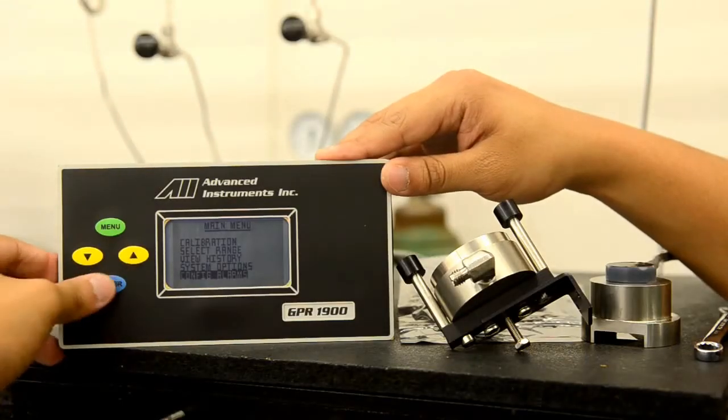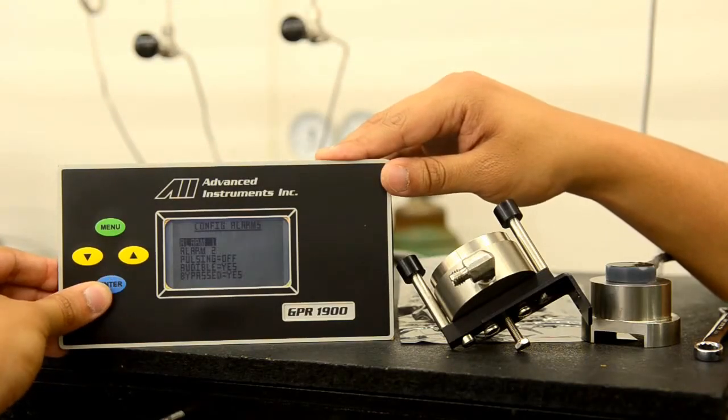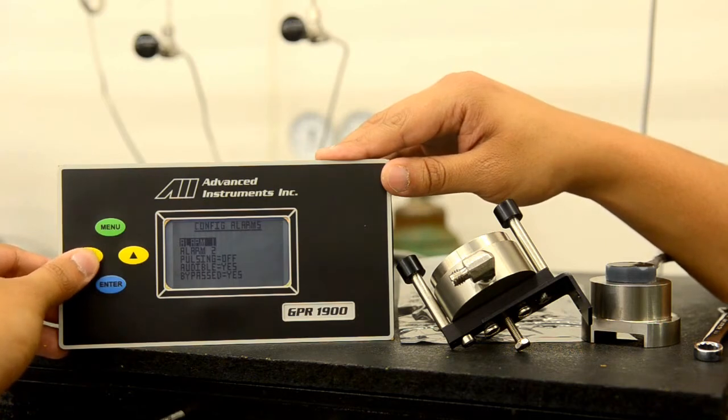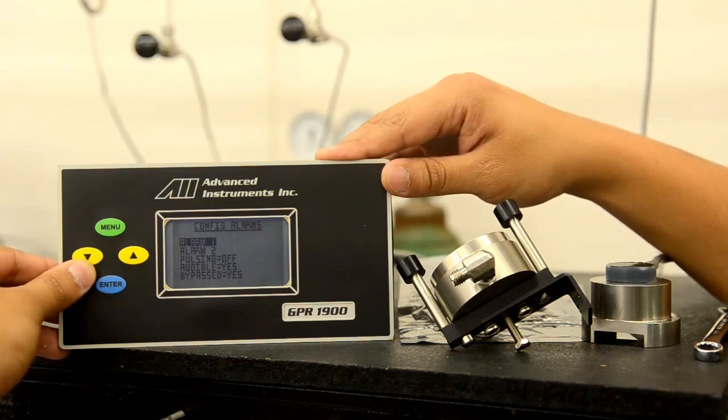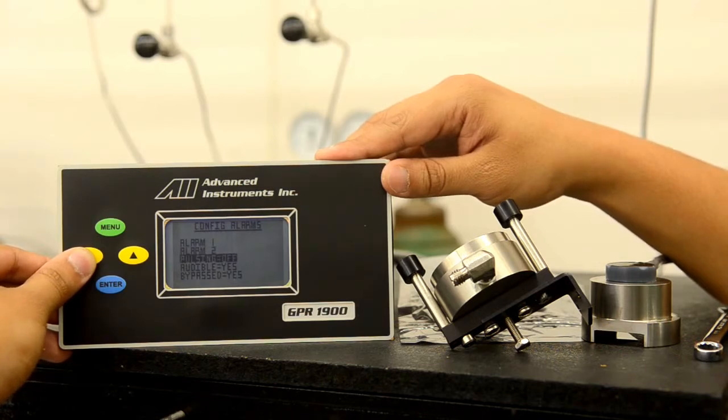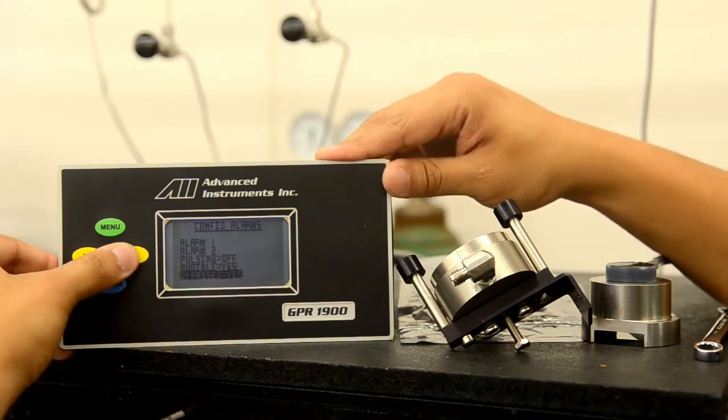We will now go over the configure alarm menu. As you can see here, we have the options of alarm one, alarm two, pulsing, audible, and a bypass option.